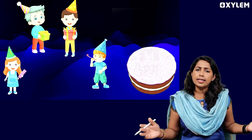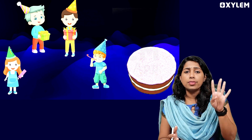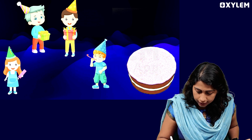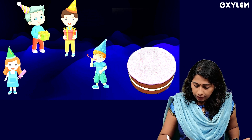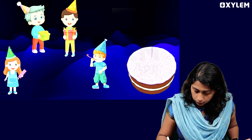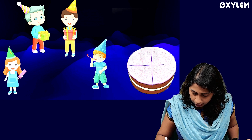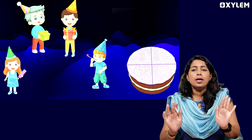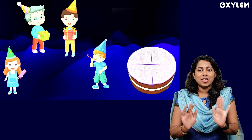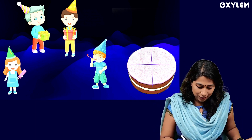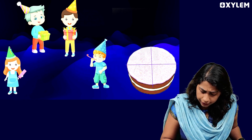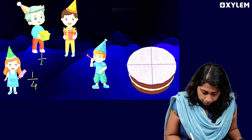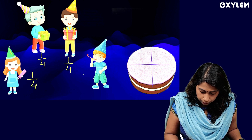Okay, there are 4 cakes here. We will see this cake — equal to 4 cakes. We will divide it into 4 equal pieces. I divide it into 4 parts. One piece out of 4 — that is 1 out of 4 pieces. So we get 1 out of 4 pieces.